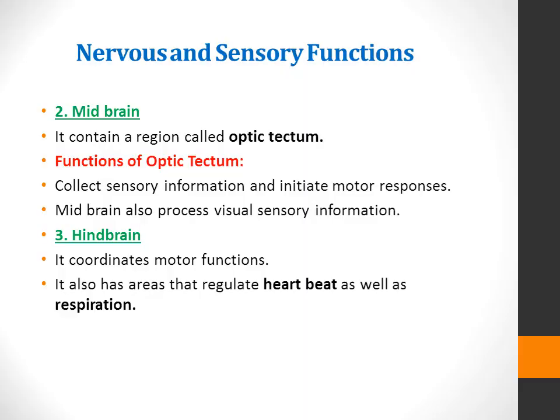The second component of the brain of amphibians is the midbrain. The midbrain contains a region called the optic tectum. The functions of the optic tectum include the collection of sensory information and initiation of motor responses. The midbrain also processes visual sensory information. Complex integrative activities of frogs occur in the midbrain's optic lobes.